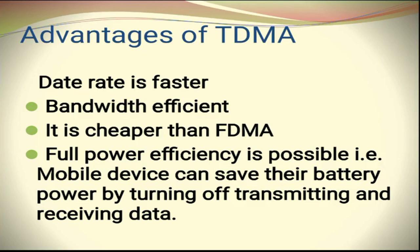The advantages of TDMA include: first, it has a very fast data rate because the user has complete accessibility of the satellite during their particular turn and can use the complete bandwidth. Second, it is bandwidth efficient — within a particular time slot the user can access the full bandwidth. Third, it is cheaper than FDMA.